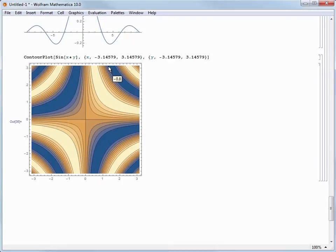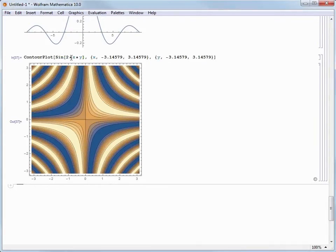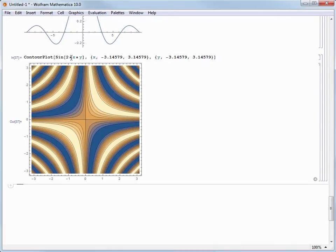So let's change the expression so that we have a contour plot of sine of 2 times x times y, and it's as simple as adding in the 2 and then re-evaluating to see the result. I hope you're starting to see how nice it is to start with Freeform Input and then migrate to using the Wolfram Language command directly to get exactly the result you are looking for.